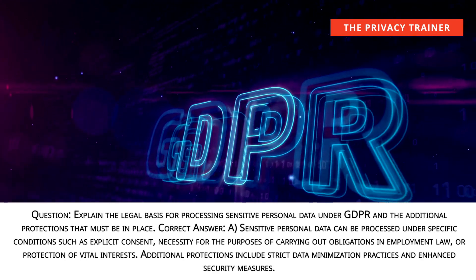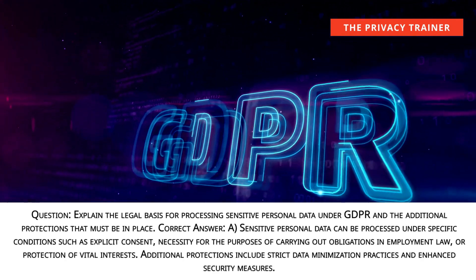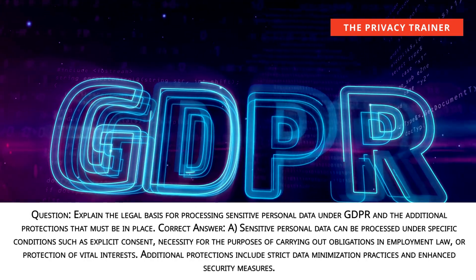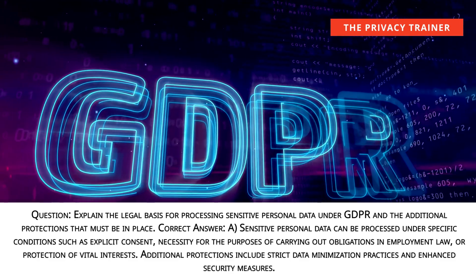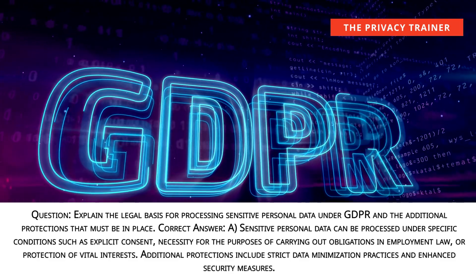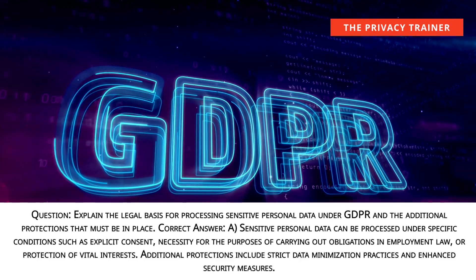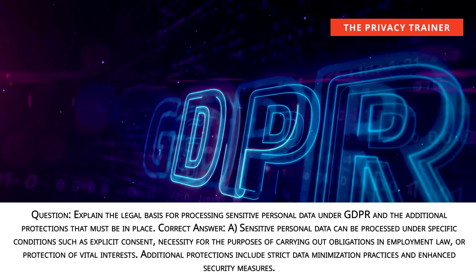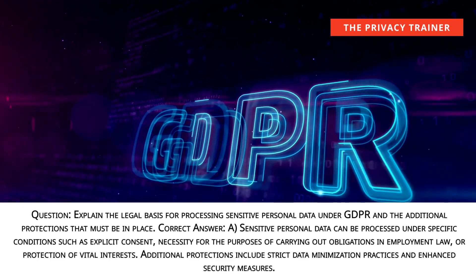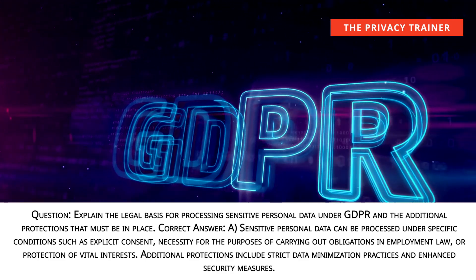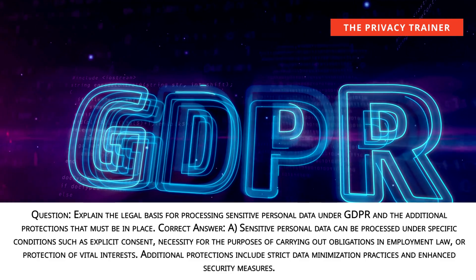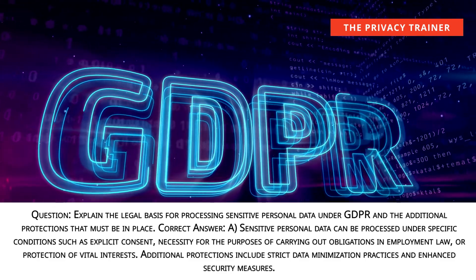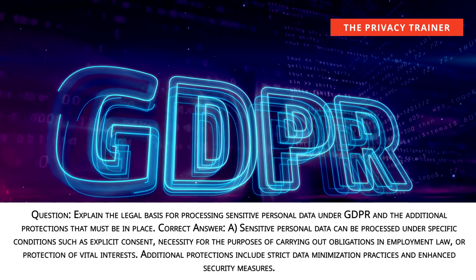Question: Explain the legal basis for processing sensitive personal data under GDPR and the additional protections that must be in place. Answer A: Sensitive personal data can be processed under specific conditions such as explicit consent, necessity for the purposes of carrying out obligations in employment law, or protection of vital interests. Additional protections include strict data minimization practices and enhanced security measures.